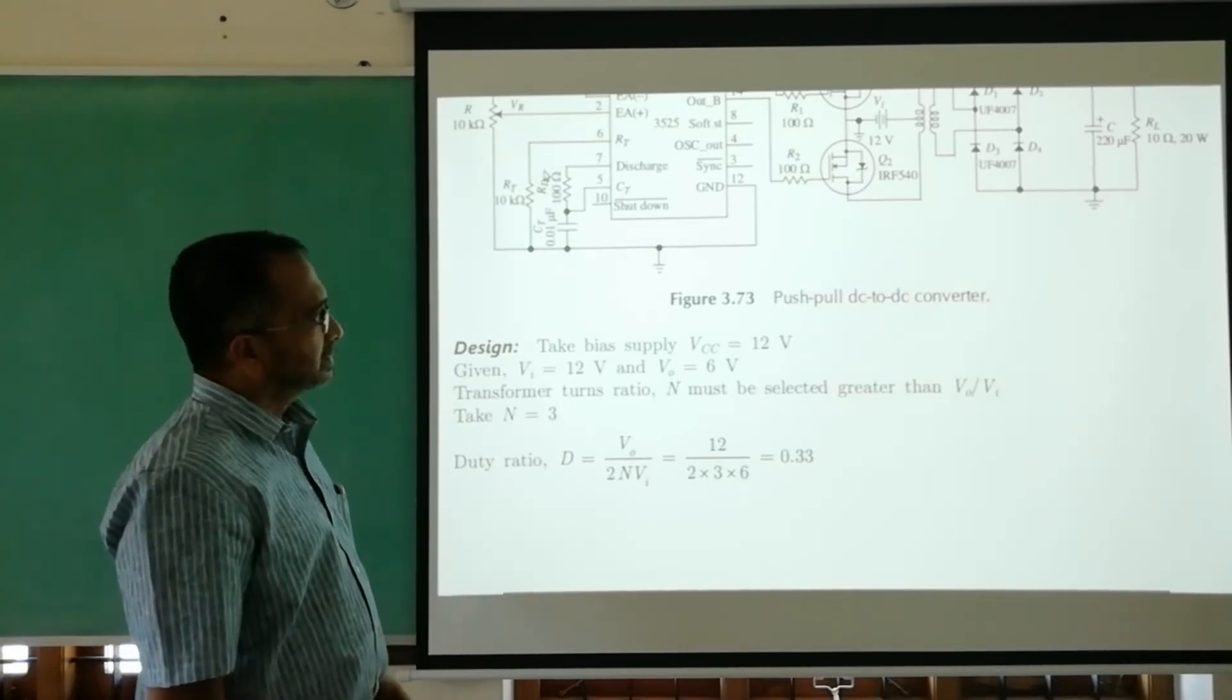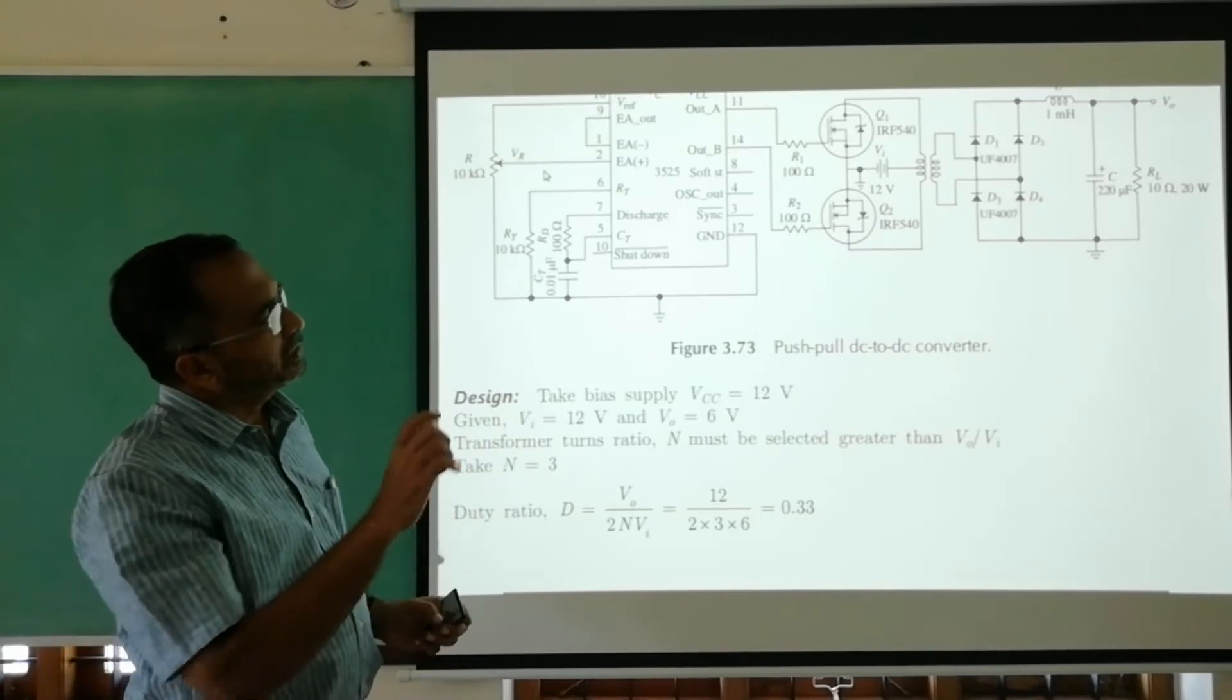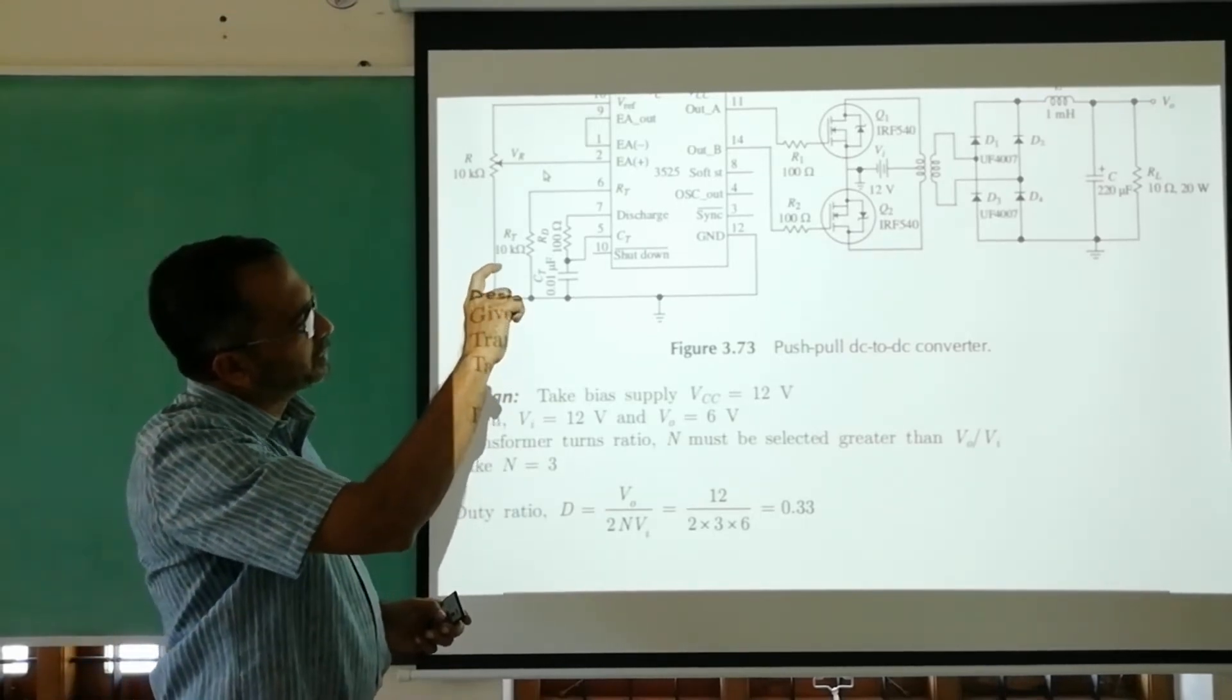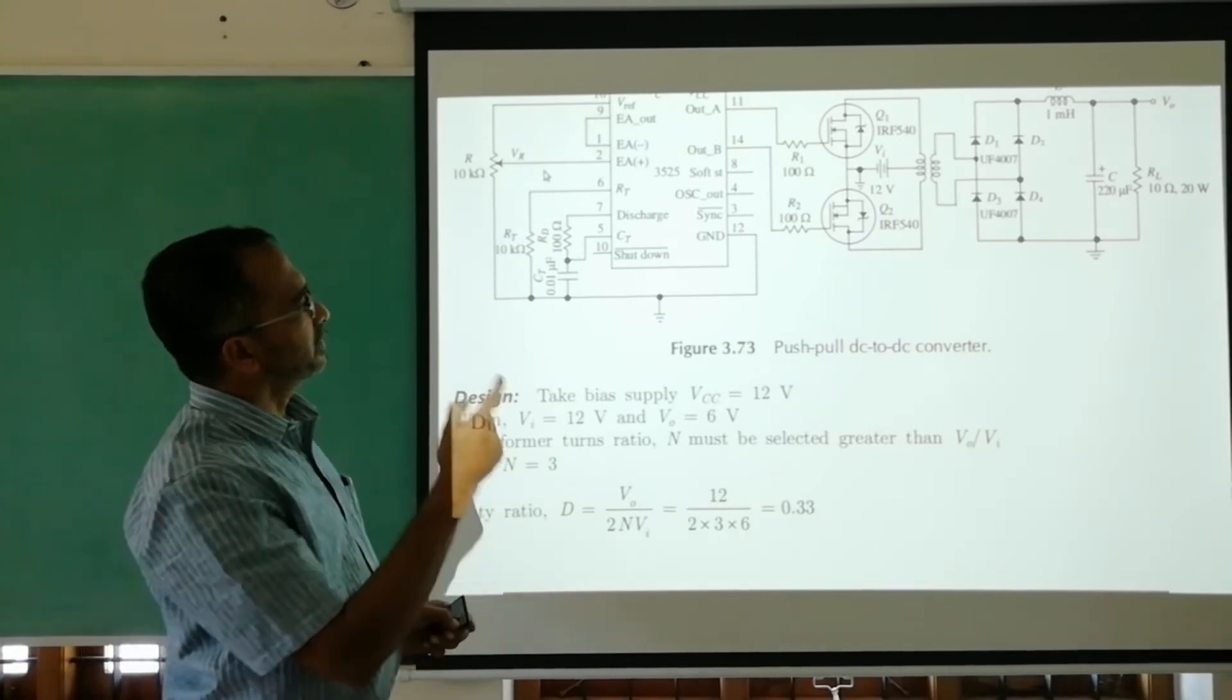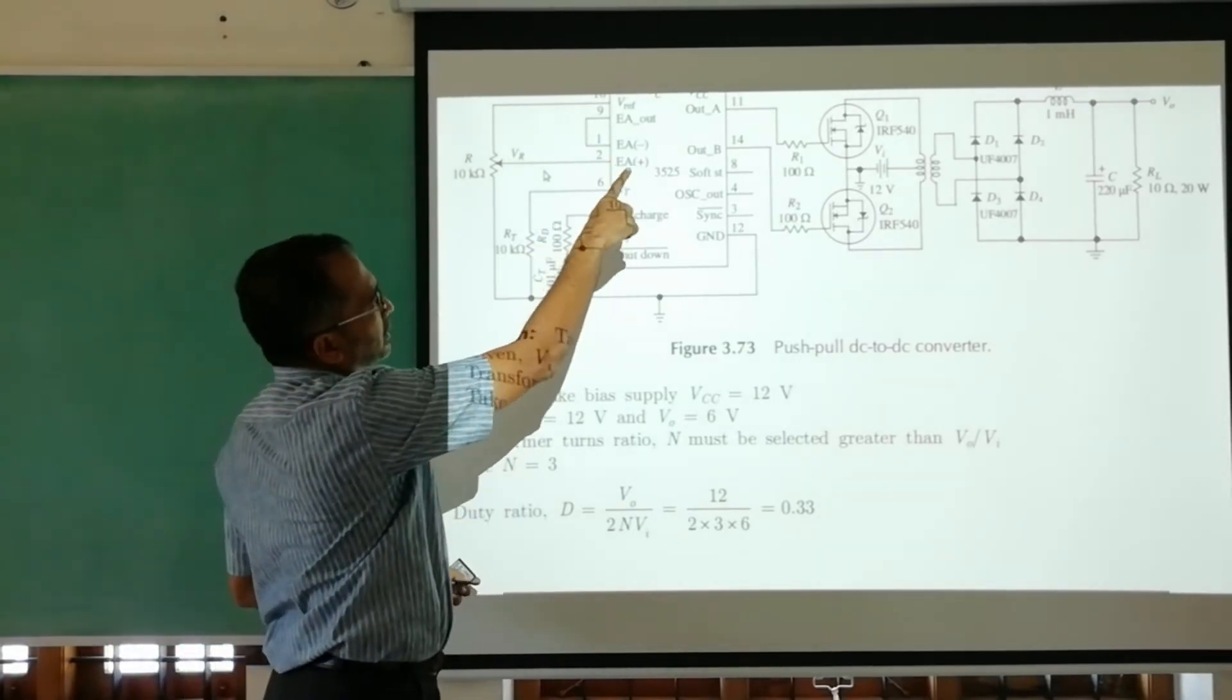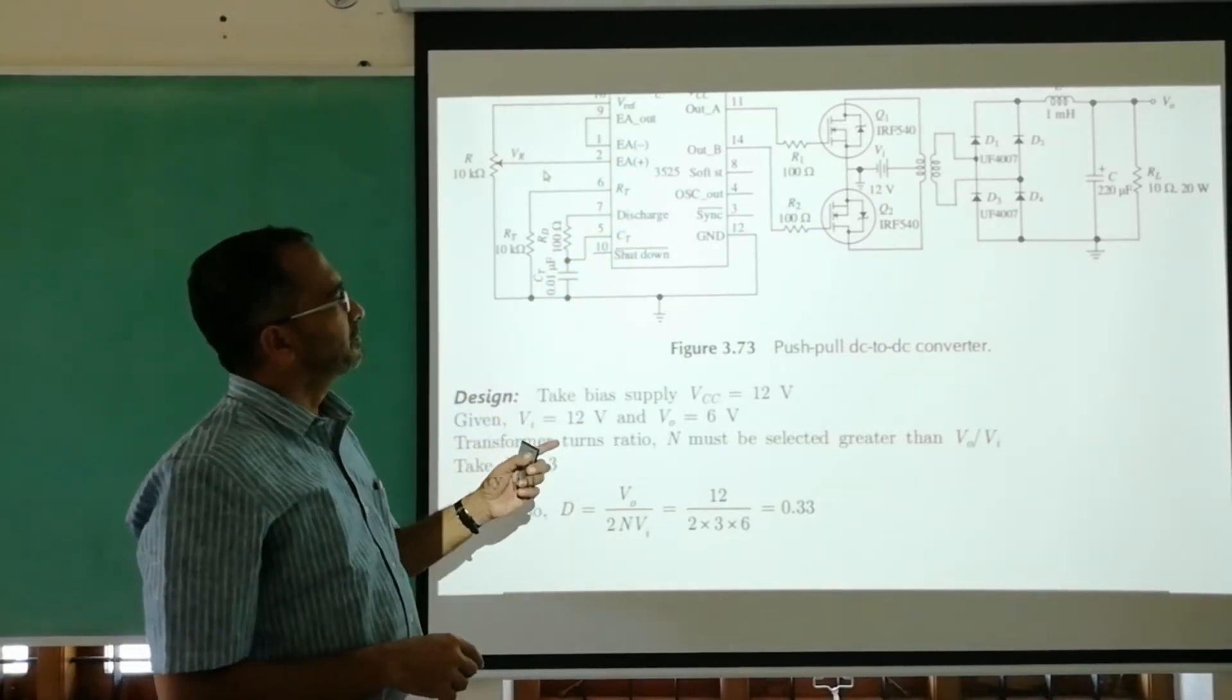In that circuit, when Q1 is turned on, the input 12 volts immediately appears across the upper half of the secondary with negative at top and positive at the midpoint of the transformer.